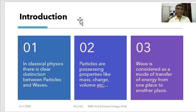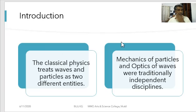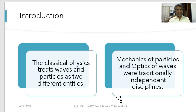There are different types of waves. Some waves require a medium for transmission — these are called mechanical waves. Others do not require a medium and are called non-mechanical waves or electromagnetic waves. In classical physics we studied the mechanics of particles and also wave optics, and these were traditionally independent disciplines.